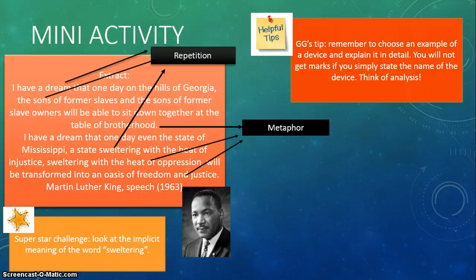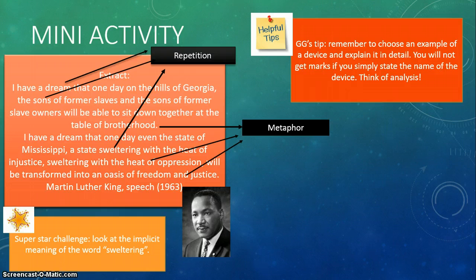Now let's look at the superstar challenge. Hopefully you were able to understand what 'sweltering' means — sweltering means roasting and boiling. Hopefully you looked at that word and thought about what it implies and why it's repeated several times. To me, this implies the anger which might be boiling in the blood of the people who want racism to end. This could be a very good paragraph when explaining this particular word choice and implicit meaning, and if you look at the effect, it's going to be even better.